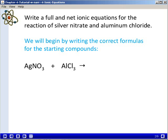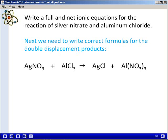We hopefully recognize that this is a double displacement reaction since we have two ionic compounds. The products are going to be obtained by swapping ions for the reactants and we end up with silver chloride and aluminum nitrate as the correct formulas for the products.